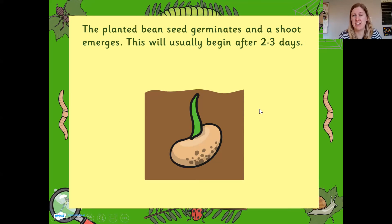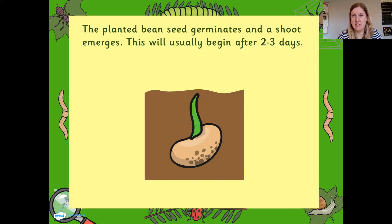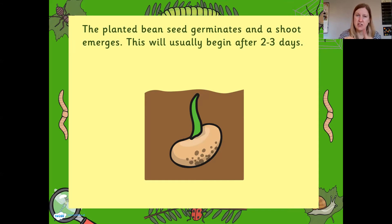Now this green thing is a shoot — so it's got a shoot coming out of it. It's a bit funny, isn't it? We call it the shoot, and it comes out of the bean. And it's this fancy word: germinates. Don't worry too much about the fancy words, but it's very grown up if you can use them. So this little bean part germinates, and this little green shoot comes out. That usually takes about two to three days to happen.